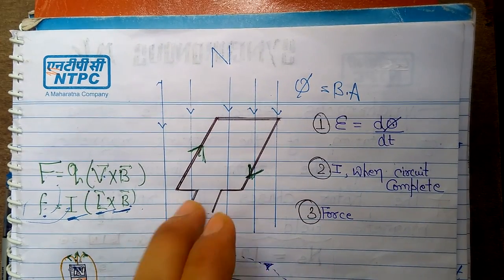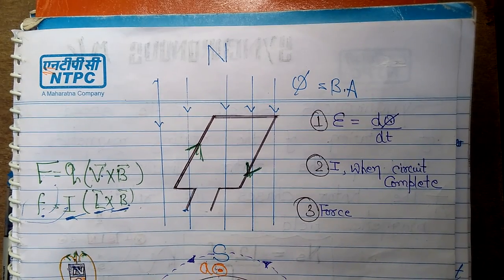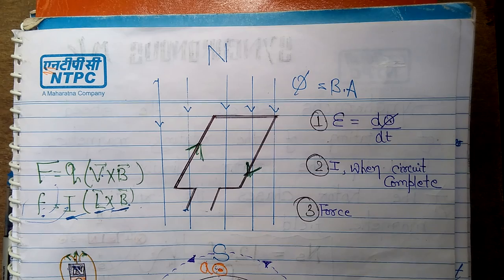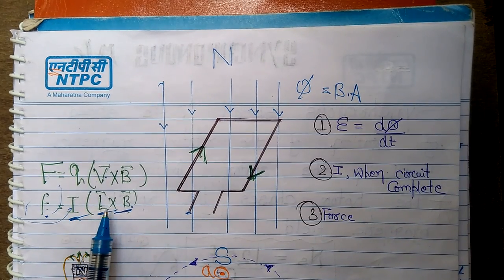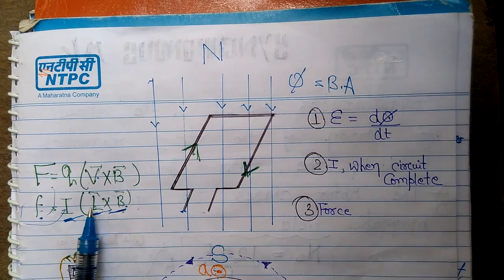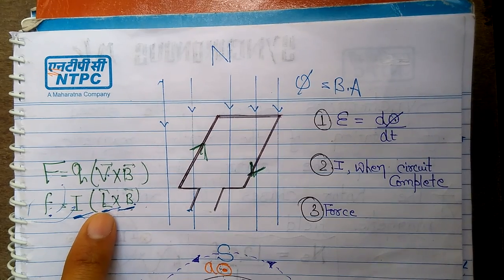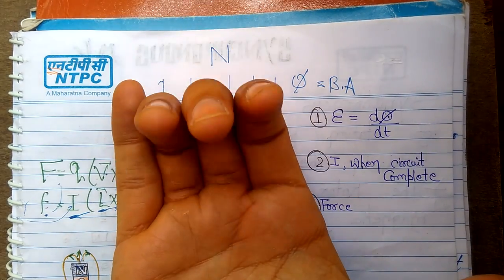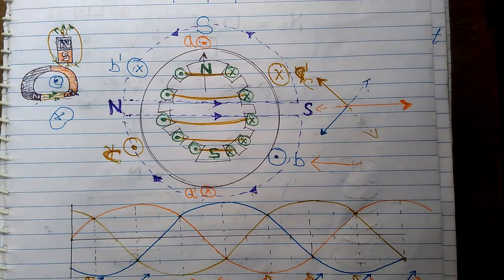The second point is: if you close the circuit by connecting a load, current will flow in the circuit — if the circuit is open, only EMF will be induced. Third, if there is a current-carrying conductor placed in a magnetic field — not necessarily a changing magnetic field — a force will be produced on that conductor. That is the Lorentz force, given by F = qv × B, or equivalently F = IL × B. The direction of this Lorentz force can be found using the right-hand rule: put your fingers in the direction of L and curl them toward B, and your thumb shows the direction of F.